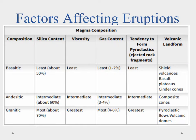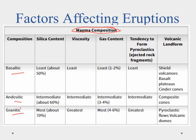The factors that affect an eruption mostly come down to magma composition — what the magma is made of. Recalling back to our discussion on igneous rocks, we have basaltic, granitic, and andesitic, and those are all based on the silica content.